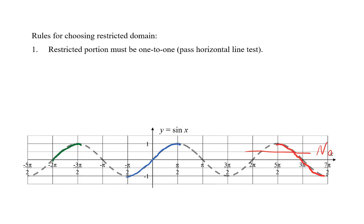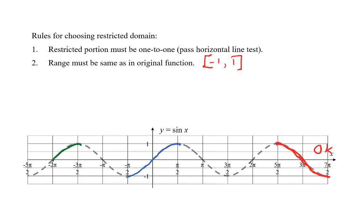We can shorten the red a little bit, and now all three parts follow the first rule. Then the second rule: we must have the same range as the original function. The original sine function has a range, or set of y values, from negative one to one. The blue and the red do that — they go all the way between positive one and negative one — but the green is too short; it doesn't have all the y values. So we extend it a little bit, and now the red, green, and blue all follow rule number two, and they still follow rule number one.